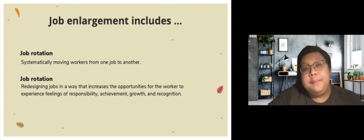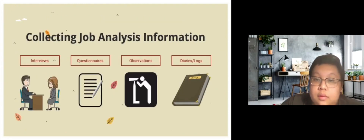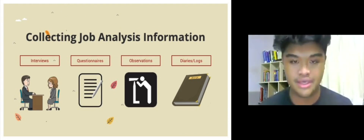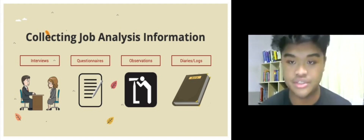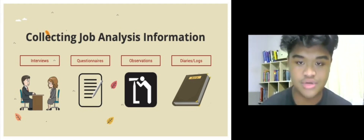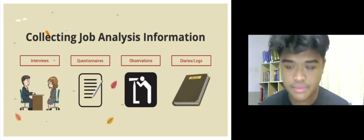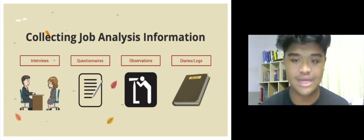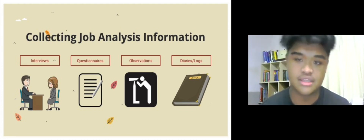My friend Salman will now explain how we can obtain the information for job analysis. There are various ways to collect information on job duties, responsibilities, and activities. It usually includes four methods: interviews, questionnaires, observations, and diaries or logs, because these gather realistic information about what the job incumbents do, and managers use these methods for developing job descriptions.